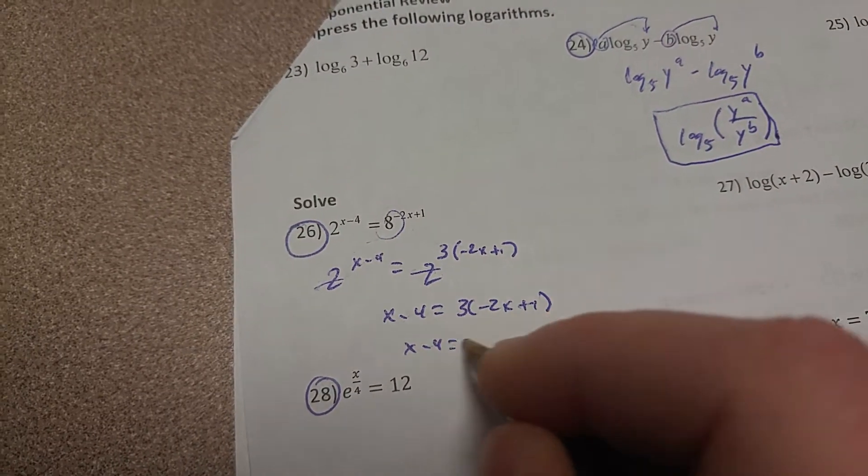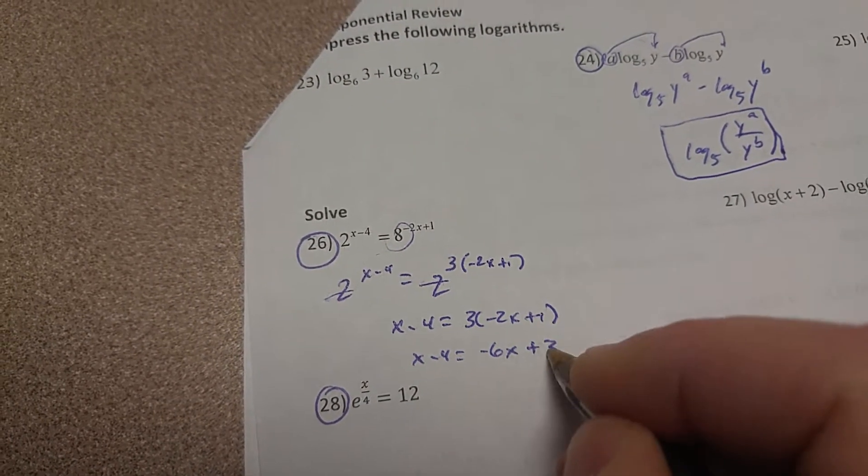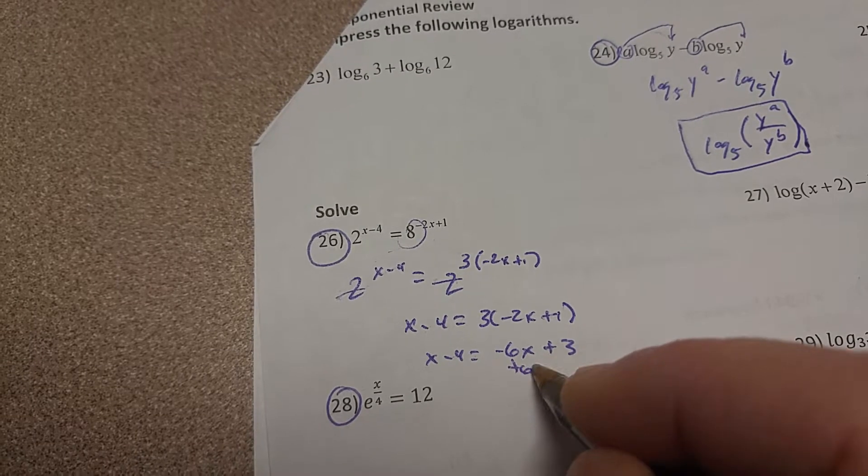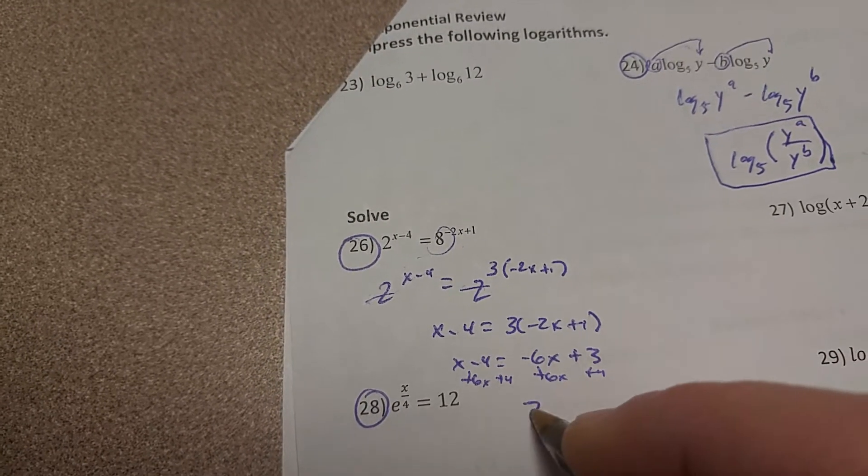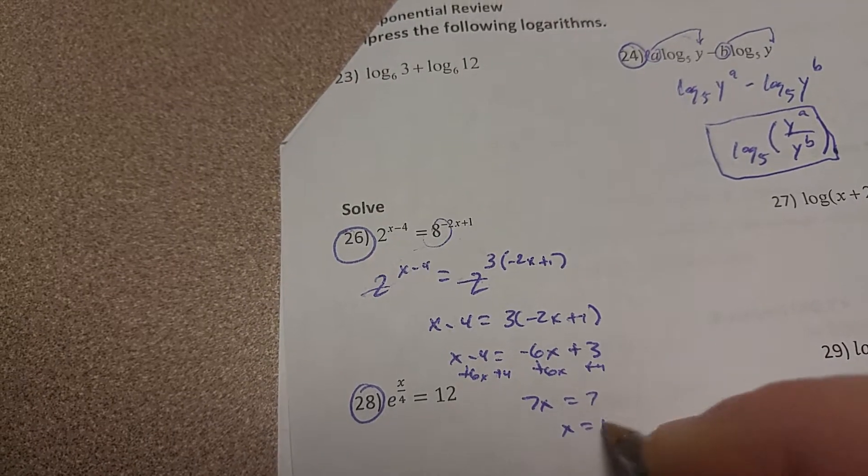So x minus 4 equals negative 6x plus 3. I'm going to add 6x and add 4 over here. So I end up with 7x equals 7, so x equals 1.